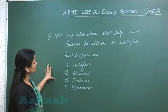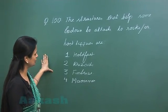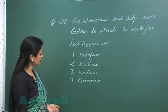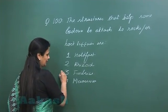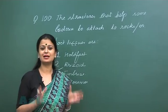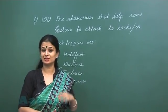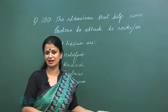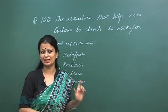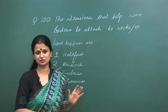Now question number 100: The structures that help some bacteria to attach to rocks or host tissues are? The structures involved in adhesion are fimbriae. Fimbriae are surface structures present both on the surface of gram positive as well as gram negative bacteria. They are non-motile structures and the function is attachment adhesion.